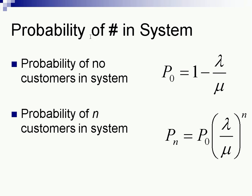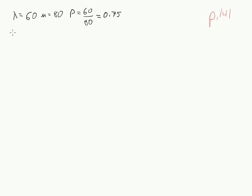So the probability that nobody is here is 1 minus lambda divided by mu. Well you remember that rho, that was lambda divided by mu. So another way to write this is to say this is 1 minus rho. So for our example here, the probability that there is no one here is 0.25, 25%.